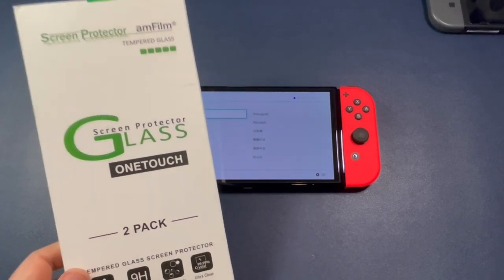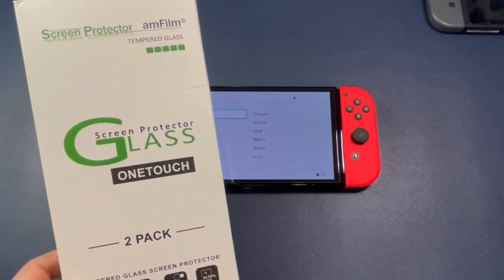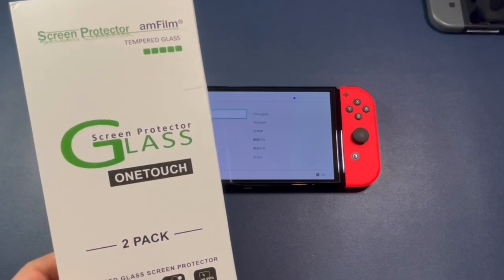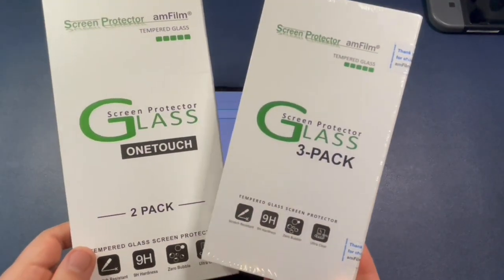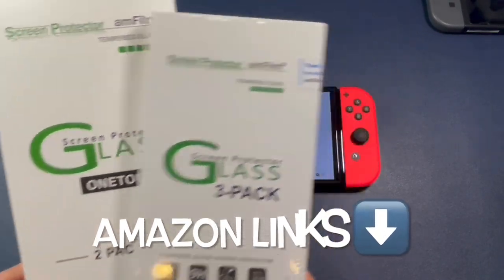Make sure you get the right screen protectors for your Nintendo Switch. There are different OLED versions and normal Switch, as well as Nintendo Switch Lite screen protectors. So make sure you get the right one by reading the descriptions. And we'll have the Amazon links down below for these.